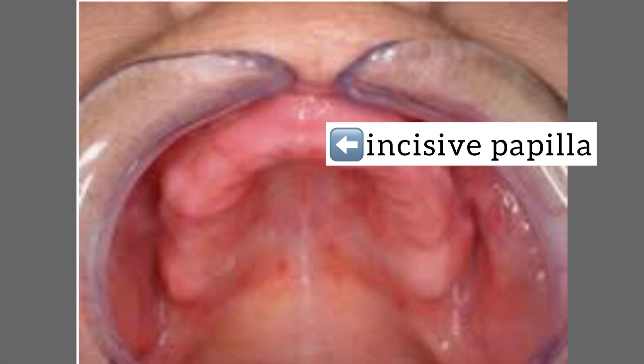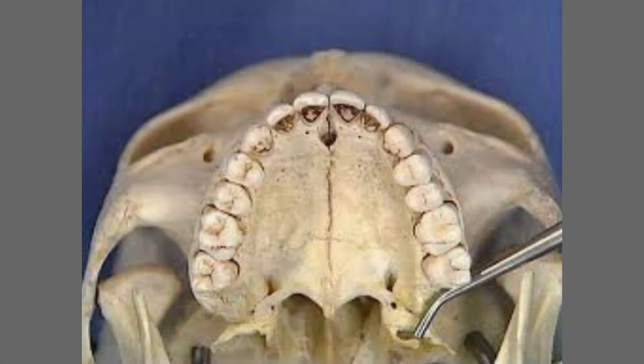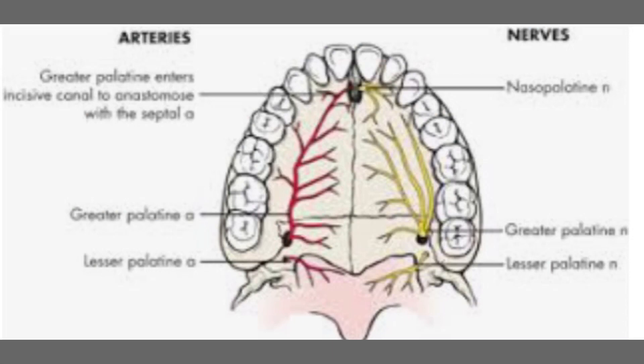In my last class I mentioned these are features that make an area capable of withstanding masticatory load — but then why is the incisive papilla a relieving area? See, this mound of tissue — the incisive papilla — is situated just above the incisive foramen. A foramen is a hole or opening in the bone through which a neurovascular bundle passes. This foramen is the exit point of the nasopalatine nerve, which is the maxillary branch of the trigeminal nerve.